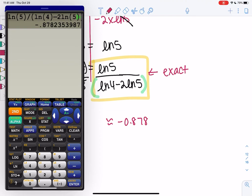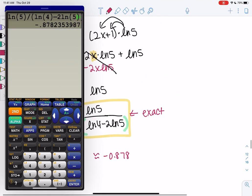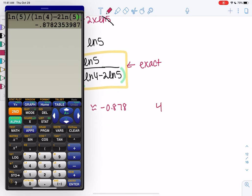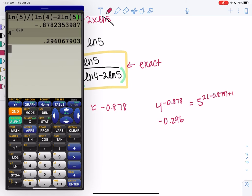And the only reason I might want the approximate answer is to check my answer. So the left side was 4 to the x, so 4 to the negative 0.878. And we get 0.296. And then the right side was 5 to the 2x plus 1. So 2 times negative 0.878 plus 1.